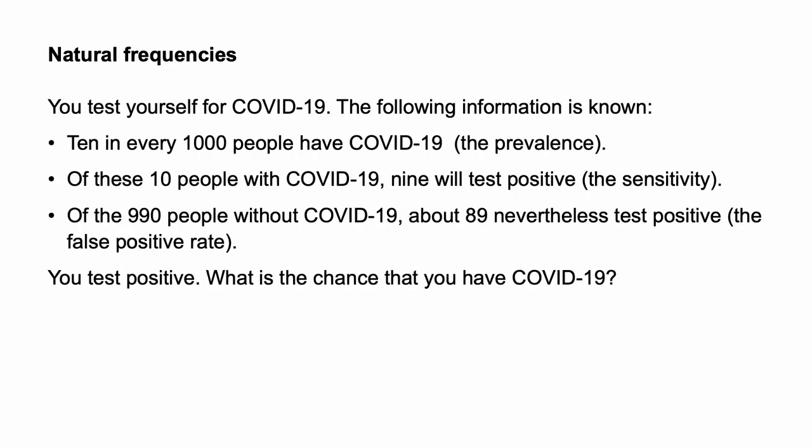Let us reconsider this medical problem with an alternative representation using natural frequencies. You test yourself for COVID-19. Ten in every one thousand people have COVID-19, the prevalence. Of these ten people with COVID-19, nine will test positive, the sensitivity. Of the 990 people without COVID-19, about 89 nevertheless test positive, the false positive rate. You test positive. What is the chance that you have COVID-19? Seeing a representation in this manner makes the base rate and the rate of false positives much more salient and leads to more accurate estimates of the conditional probabilities.